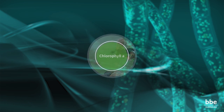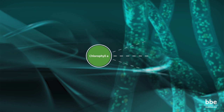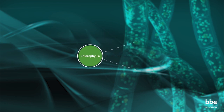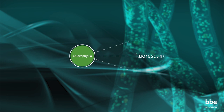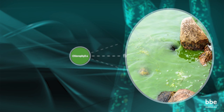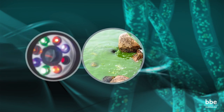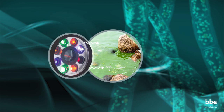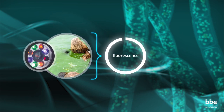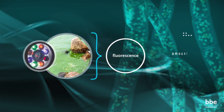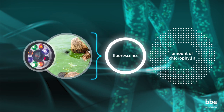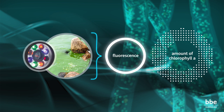A small part of the absorbed energy is emitted by the main photosynthetic pigment, chlorophyll A, as fluorescence. If the algae are illuminated by artificial light from LEDs, then the intensity of the fluorescence will be related to the amount of chlorophyll A inside of the cells.